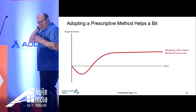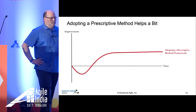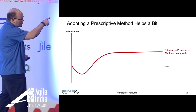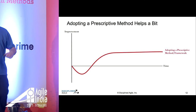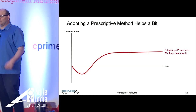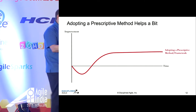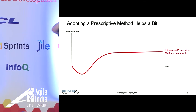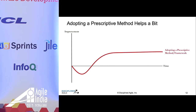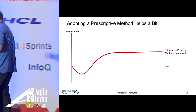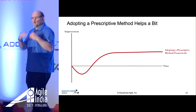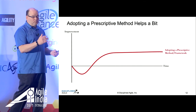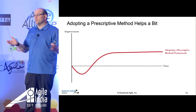To be fair, adopting a prescriptive method makes sense. Many of you have seen this curve: when you adopt a new idea, you take a productivity hit at the very beginning. You adopt Scrum, SAFe, Kanban, whatever — there's a learning curve and you're not quite as effective at the start. If things work out well, everything gets better and you improve, but then you hit the limit. Scrum tells you what it tells you; it solves the problem it solves, and then you sort of peak out. But to be fair, things have gotten better, so this is probably good.